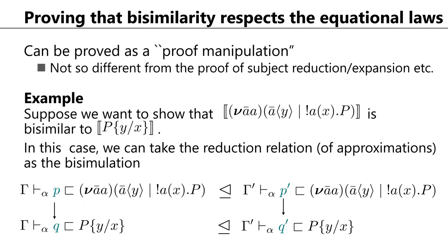Working with types helps us prove our main theorem. The main theorem is proved by showing that bisimilarity respects the equational laws, done by proof manipulations not unlike subject reduction and expansion of an intersection type system. For example, to prove the replication theorem instance, we take the reduction relation of approximations as a bisimulation and show that if p reduces to q and p-prime is a refinement of p, there exists a refinement q-prime of q such that p-prime reduces to q-prime, and vice versa.